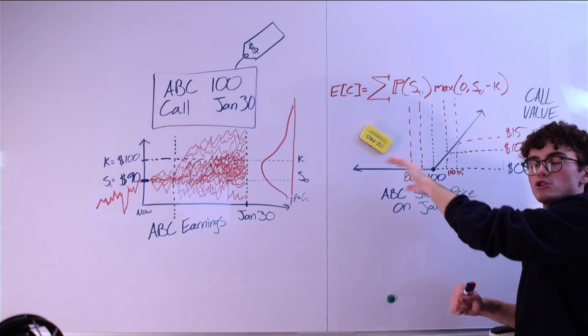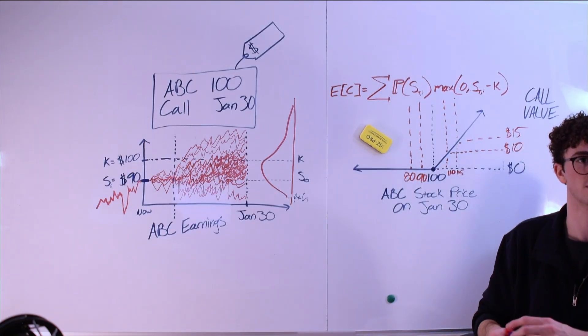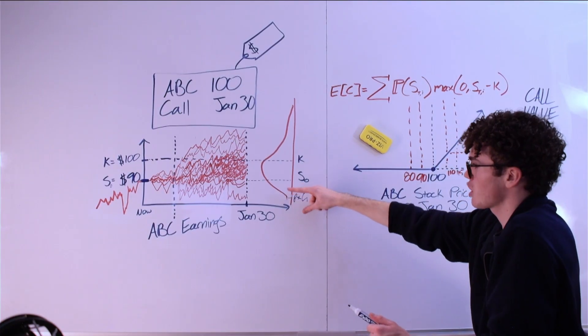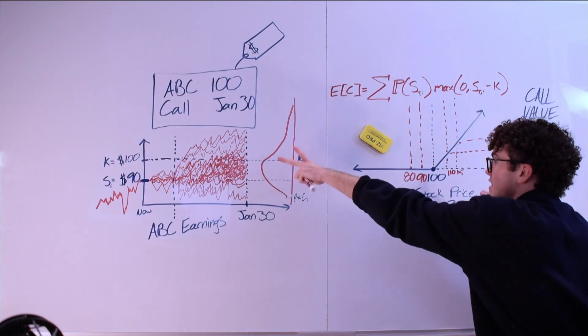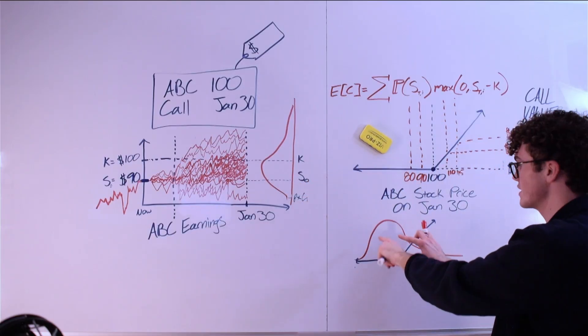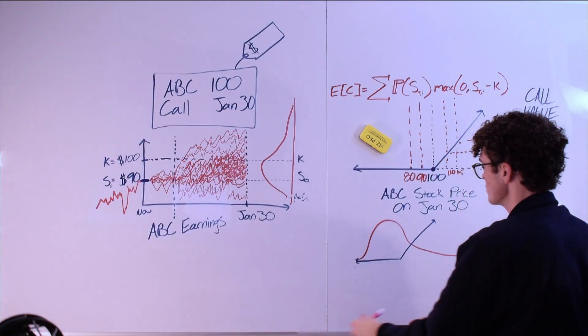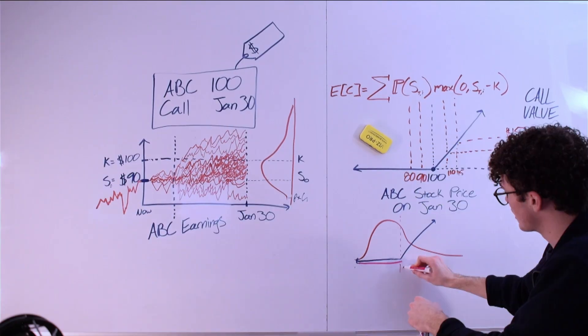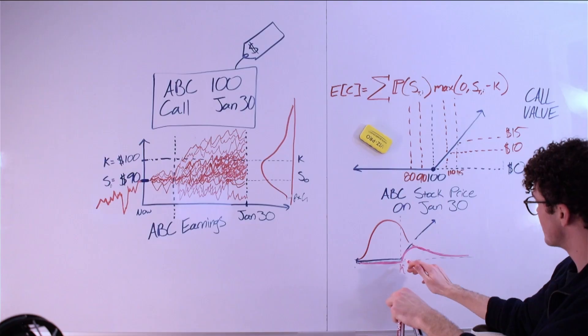If you think about it, at every single step in this distribution, we're just taking the probability here and multiplying it by the corresponding value of the option here. We're just taking this and multiplying it by this. We're taking this and multiplying it by this. For this entire range in here, which is this entire range in here, the value of the option is going to be zero. Then we arrive at the strike price here and the value of the function is non-zero. Now we have this in here, which is the probability weighted payoff function of our option.